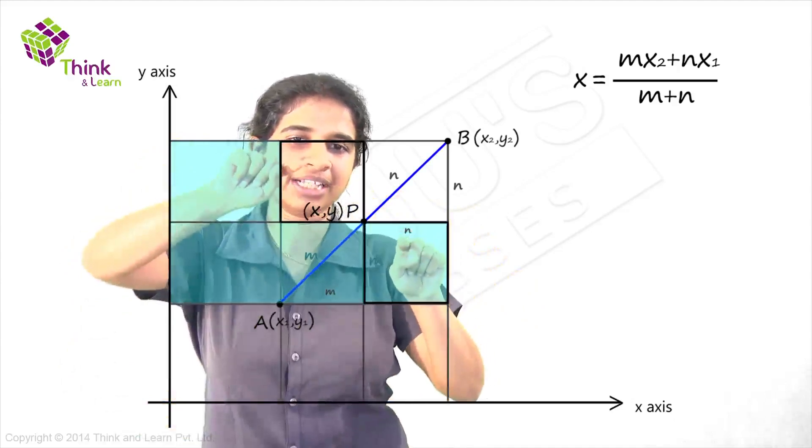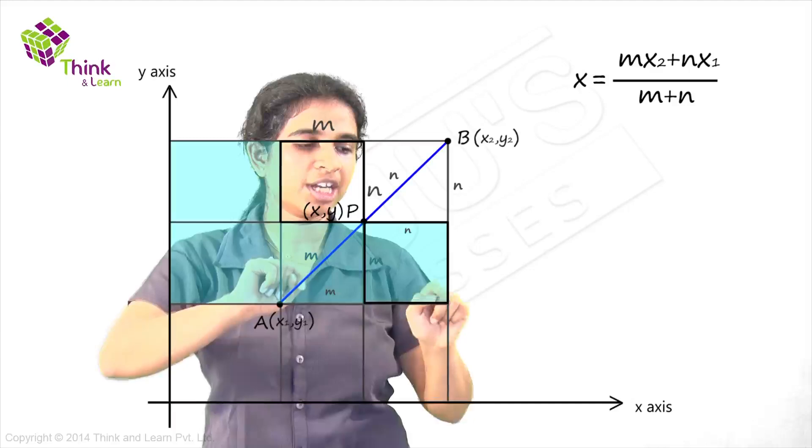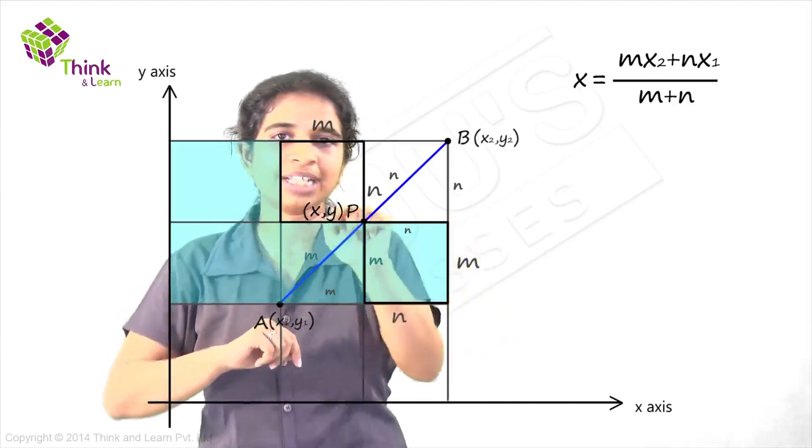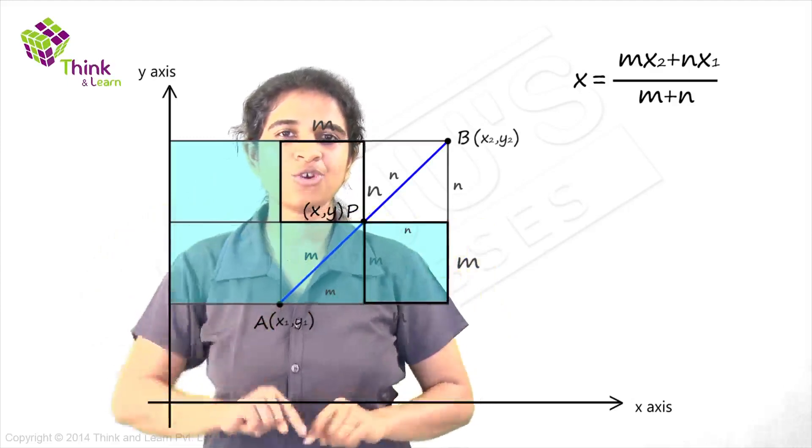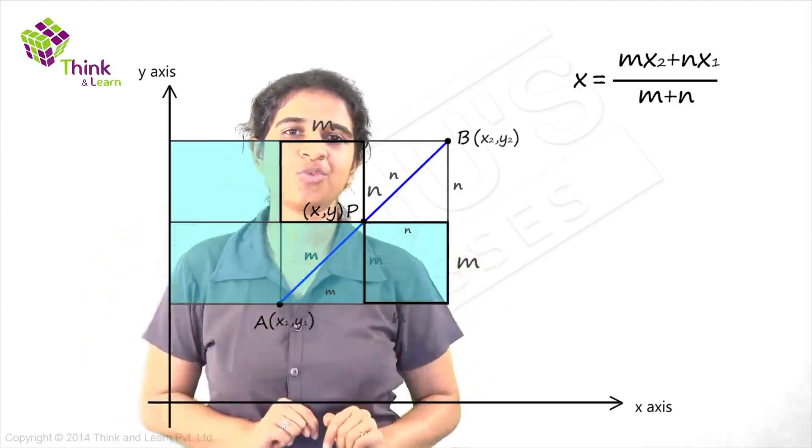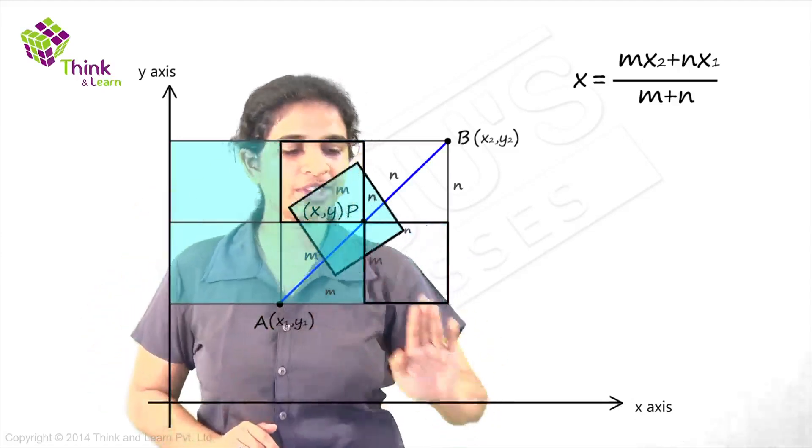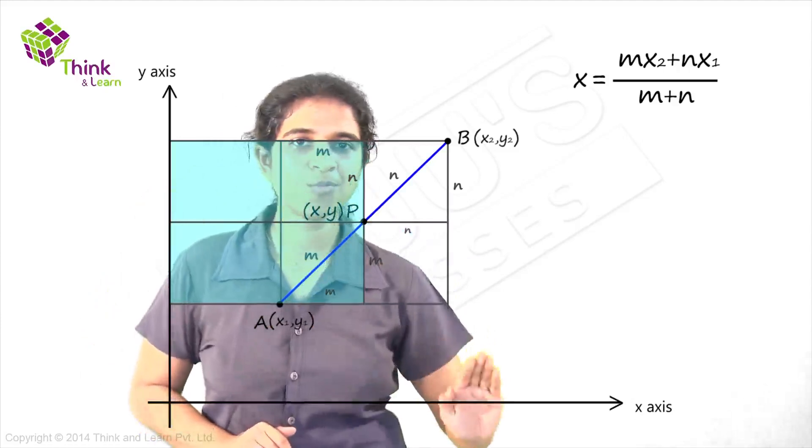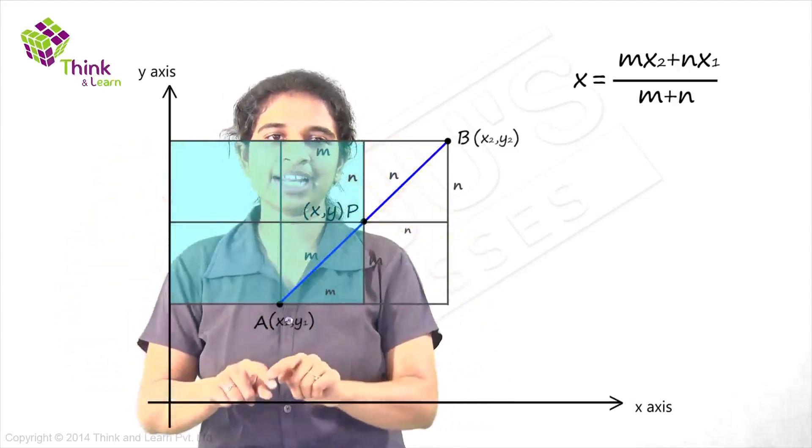Now you have this one large rectangle and this small rectangle. Look at these two rectangles. This side is m and this side is n. Similarly for this rectangle, this side is m and this side is n. These two rectangles are actually one and the same. So instead of having an odd shaped figure, let's just move this rectangle here. If I move this rectangle here, now I have a very simple rectangle.